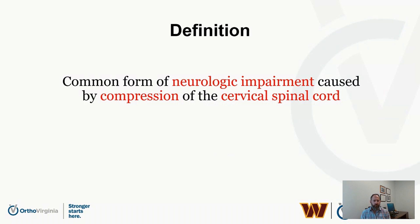The definition of cervical myelopathy is a common form of neurologic impairment caused by compression of the spinal cord — compression of the spinal cord and not compression of the nerve roots. Last month we had a webinar podcast on cervical radiculopathy, so this is somewhat akin to that, although a little different because now we're talking about compression of the spinal cord as opposed to the nerve roots.